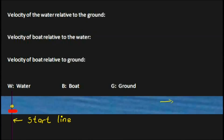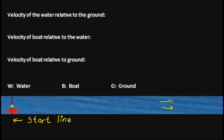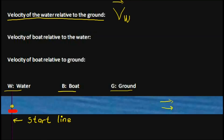This is a river flowing to the east with a velocity of 1.9 meters per second. The blue color represents the river. In physics, we use the notation: velocity of water relative to the ground — W for water, G for ground — so V_WG = 1.9 meters per second east.